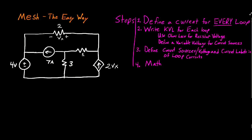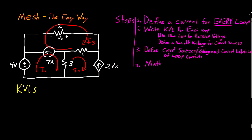To begin the problem, I'm going to draw my current loops. This is going to be loop I1 — I tend to prefer to go clockwise and keep that consistent. This is going to be loop I2, and this is going to be loop I3. Now I have to write my KVLs for each loop.